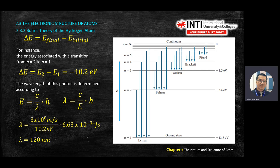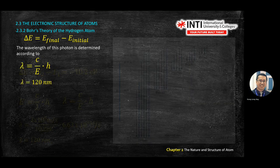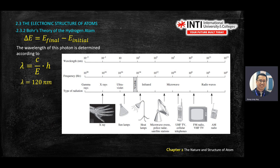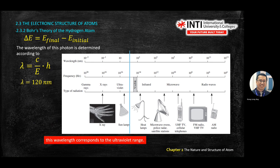Compare λ = 120 nm to the spectrum table. On the spectrum chart, 100 nm is at the far left of the visible range - 120 nm falls in the ultraviolet region, which is to the left of visible light. Therefore you are unable to see it with your eyes. This is in the ultraviolet region.